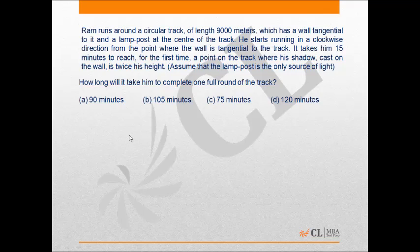He starts running in a clockwise direction from the point where the wall is tangential to the track. It takes him 15 minutes to reach, for the first time, a point on the track where his shadow cast on the wall is twice his height. Assume that the lamp post is the only source of light.